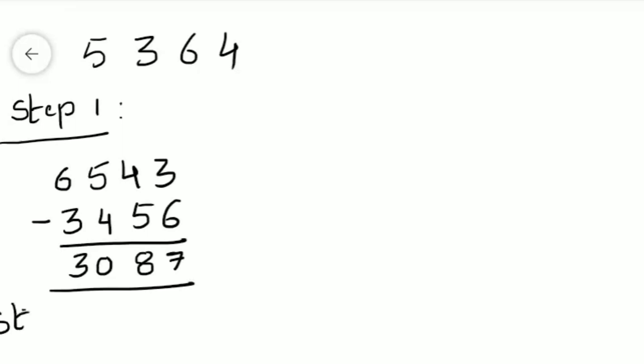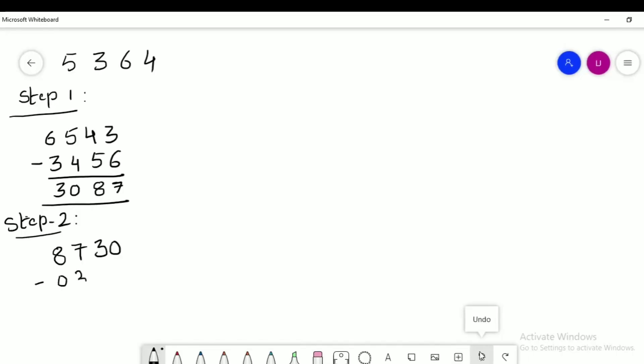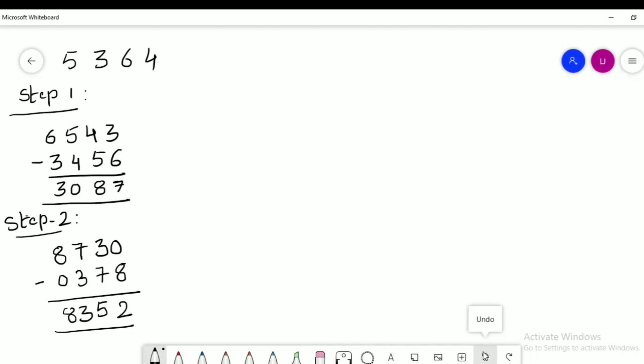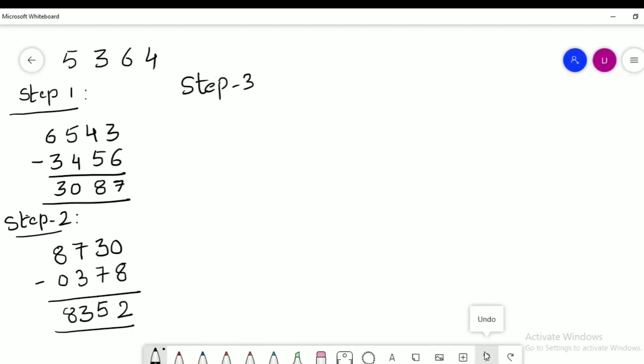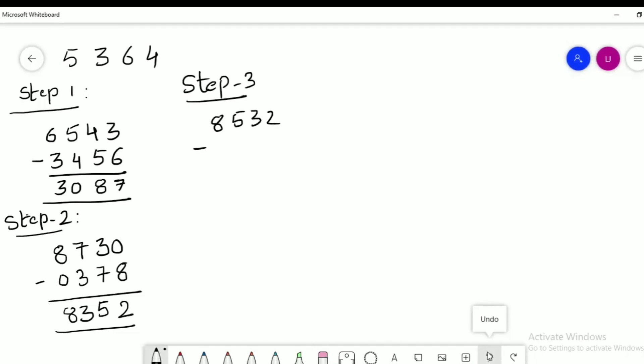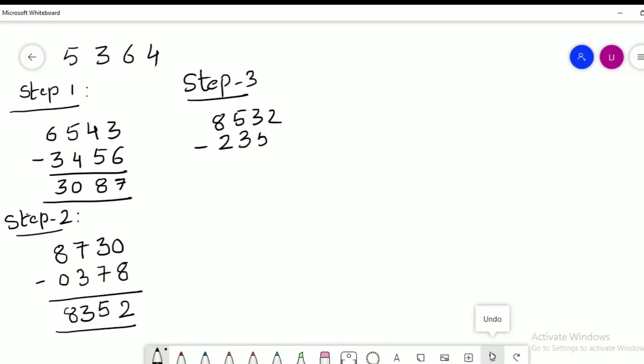Now I have to repeat this process again until I get the mystery number. How will we know that we are getting the mystery number? See, step two also completed. I got 8352.